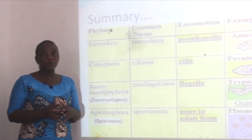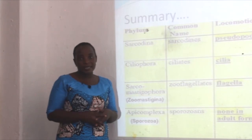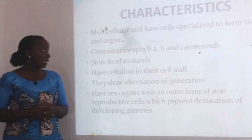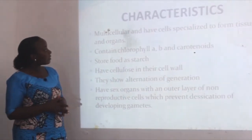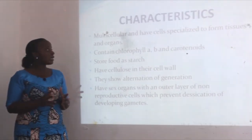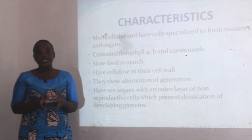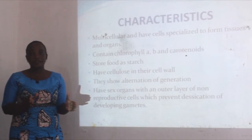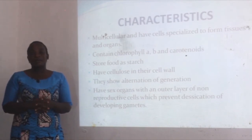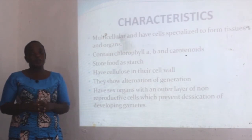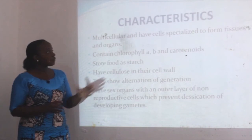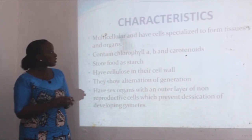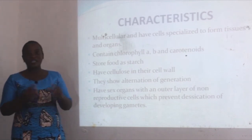We now move to the second part, which is Kingdom Plantae. Characteristics of Kingdom Plantae: plants are multicellular and have cells which are specialized to form tissues and organs. Different cells in plants are specialized to perform different functions — a group of cells forms tissue, a group of tissues forms organs, and different organs form systems.